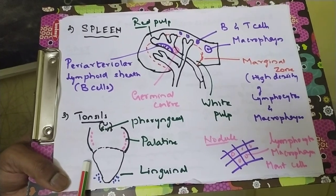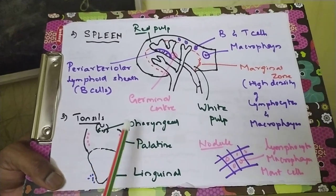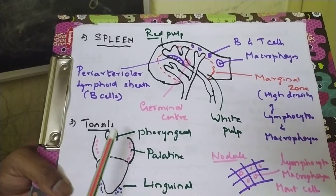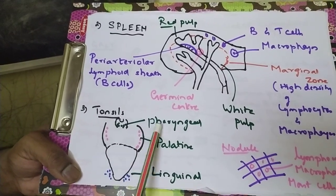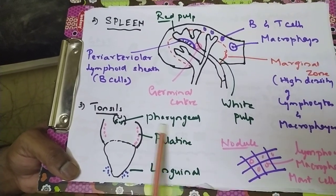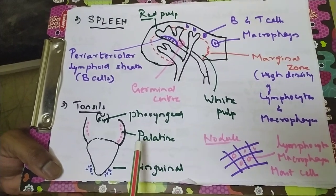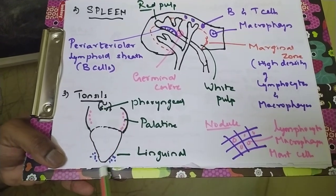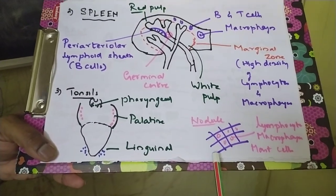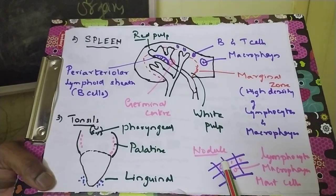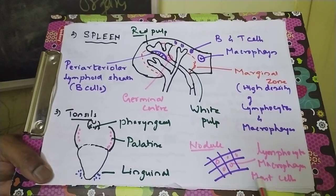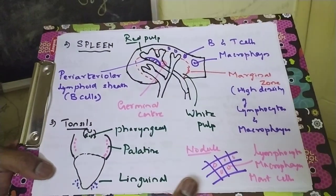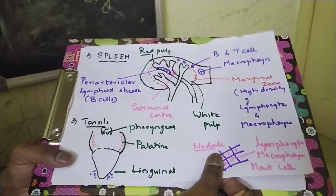Tonsils are another important secondary lymphoid organ, with three types of nodular immune organs. One is pharyngeal, in the roof of the nasopharyngeal region; the second is palatine, at the back of the mouth; and the third is lingual, below the tongue. If you take a section of these nodules, they contain lymphocytes, macrophages, and mast cells, making them important secondary lymphoid organs that lodge immune cells.